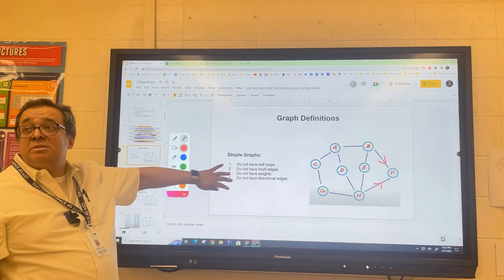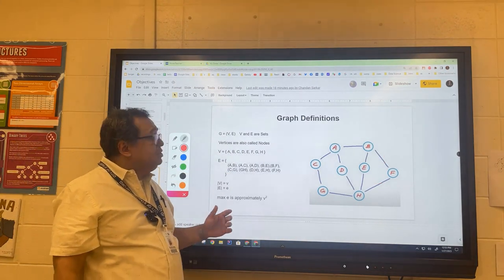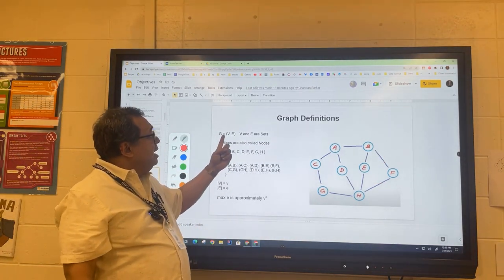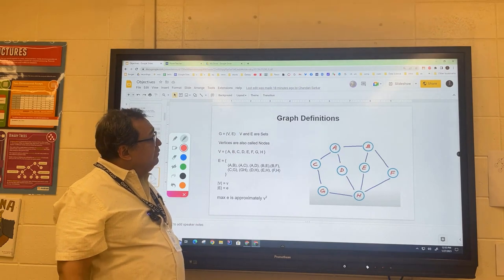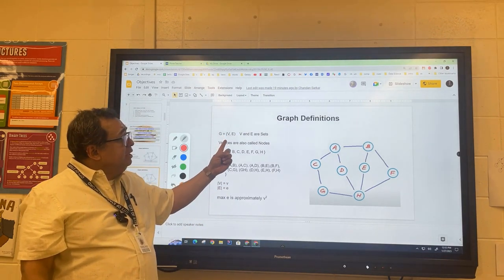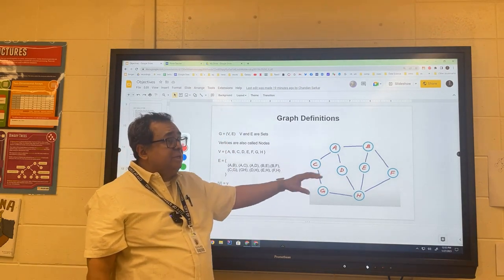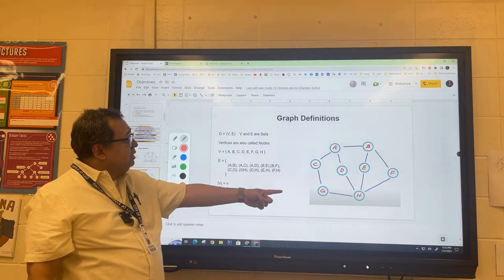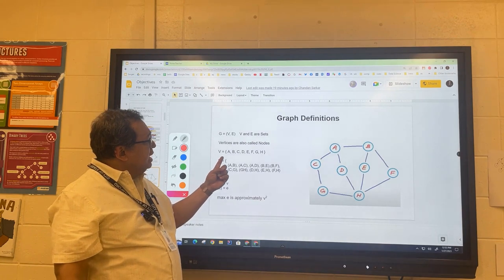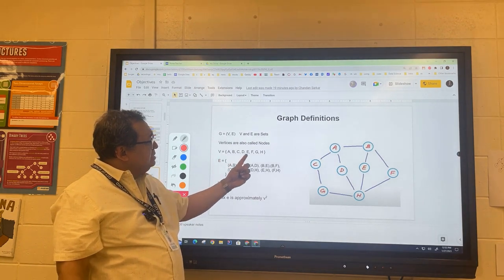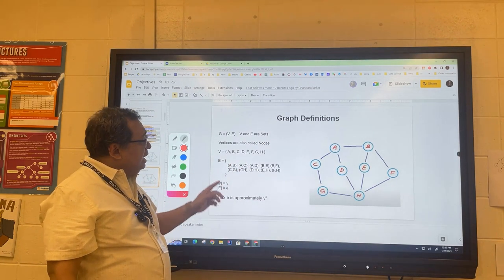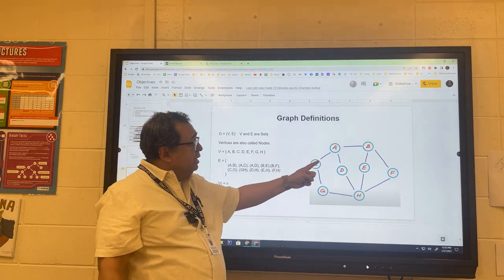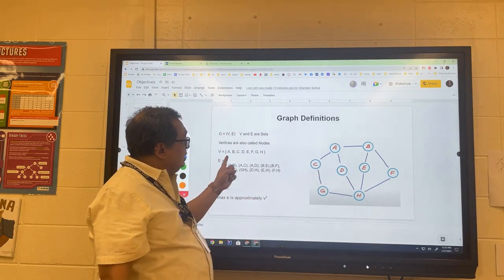In terms of what a simple graph is, it's a graph that doesn't have any of these four things. The graph consists of two sets: a set of vertices and a set of edges. We refer to the letter capital V to refer to all the vertices, and the letter capital E to refer to all the edges. On this particular graph you can see that the vertices are labeled as A through H.